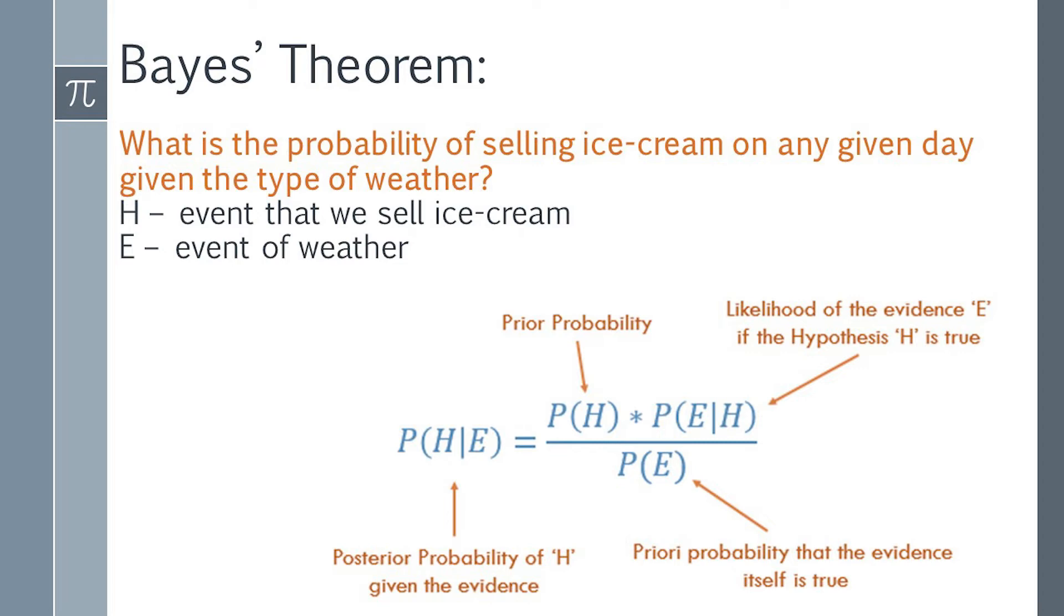Mathematically, this is written as P(H|E). Where H is equivalent to ice cream, E is equivalent to type of weather, which is equivalent to the left-hand side of the equation P(H|E). On the right-hand side is the expression that is known as prior because we might already know the marginal probability of the sale of ice cream.